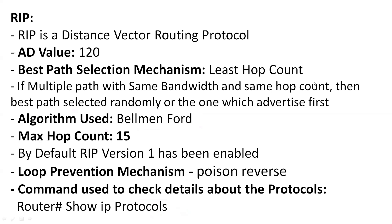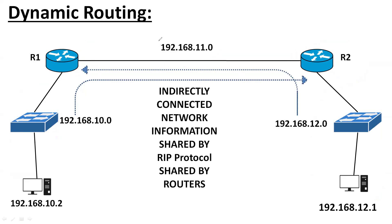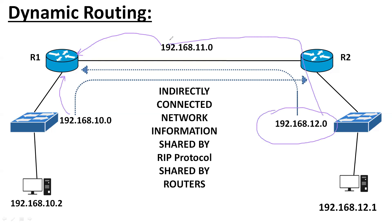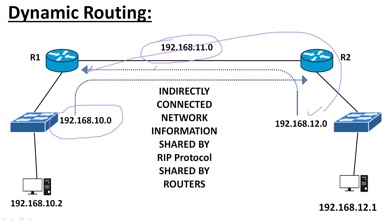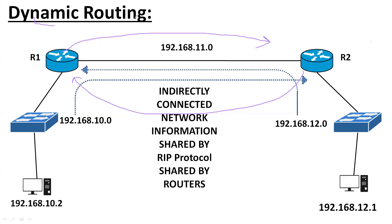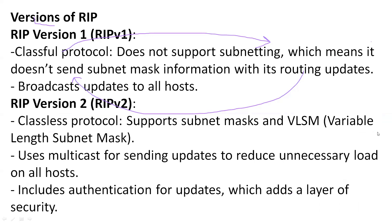In dynamic routing, you only have to provide the information of your directly connected networks. Indirectly connected network information will be automatically provided by the protocol. For example, 192.168.12.0 is an indirectly connected network and its information will be automatically forwarded by the RIP update — you do not have to define it manually.